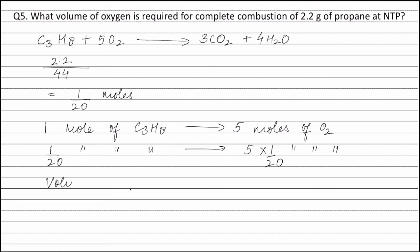The volume of oxygen required equals the moles of oxygen (5/20) multiplied by the molar volume (22.4 liters). Solving this gives a volume of oxygen equal to 5.6 liters.